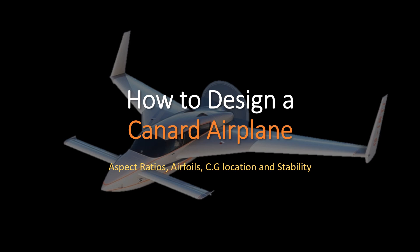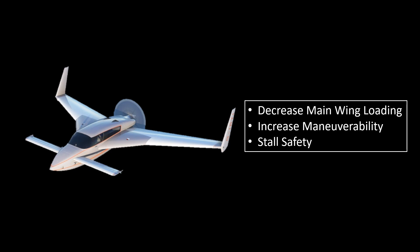A canard plane has a smaller wing placed in front of the main wing. A canard wing can be used to decrease the main wing's loading, to make the aircraft more maneuverable, or to increase stall safety.